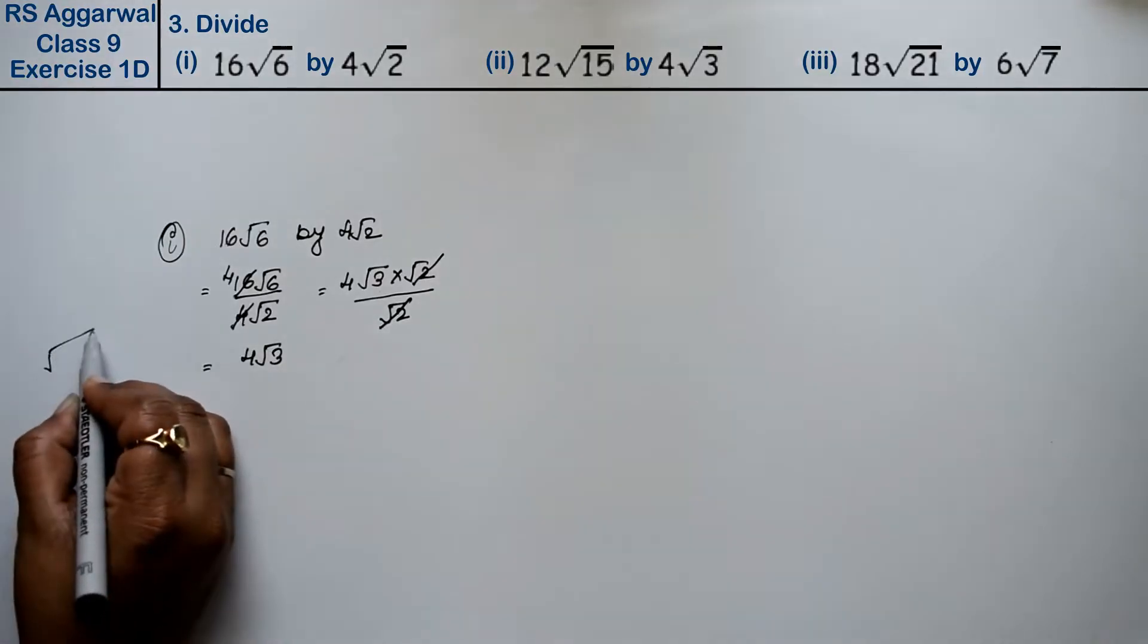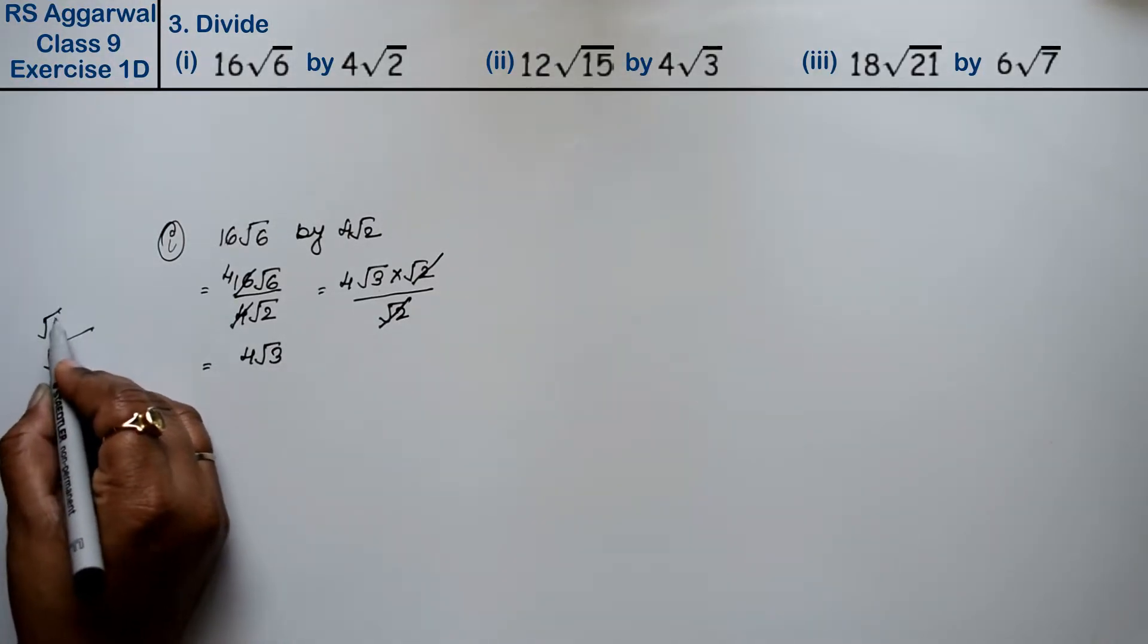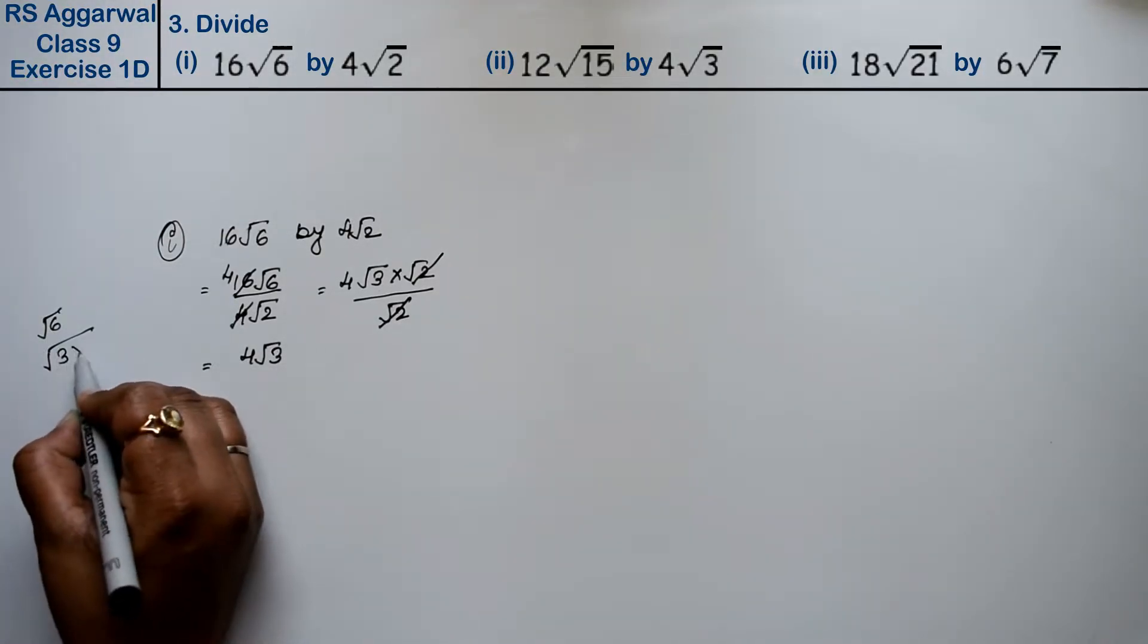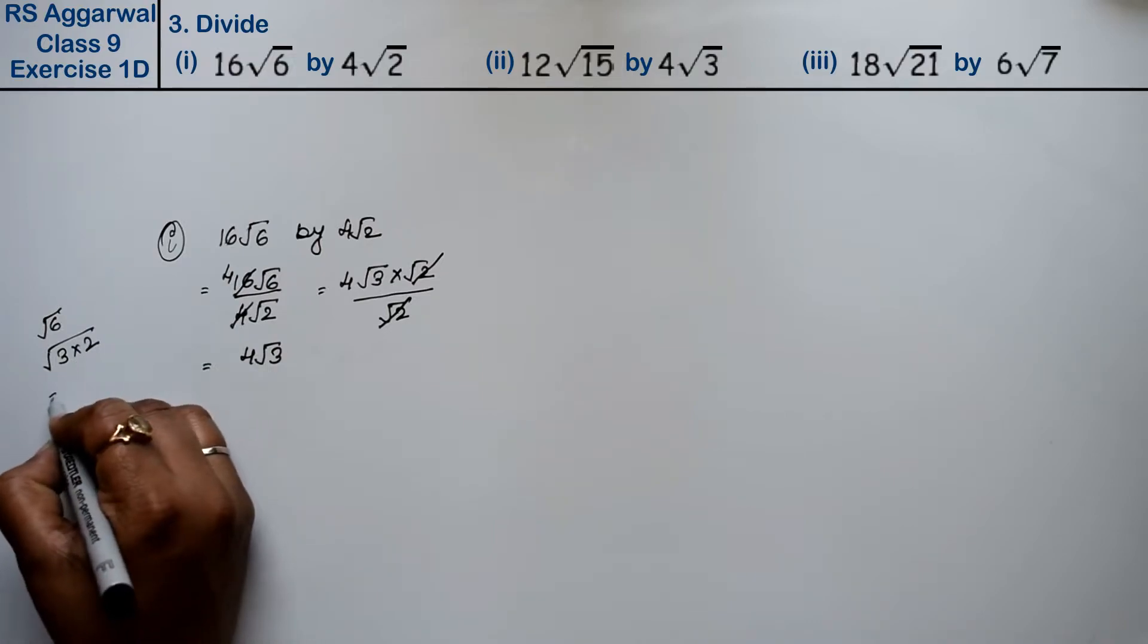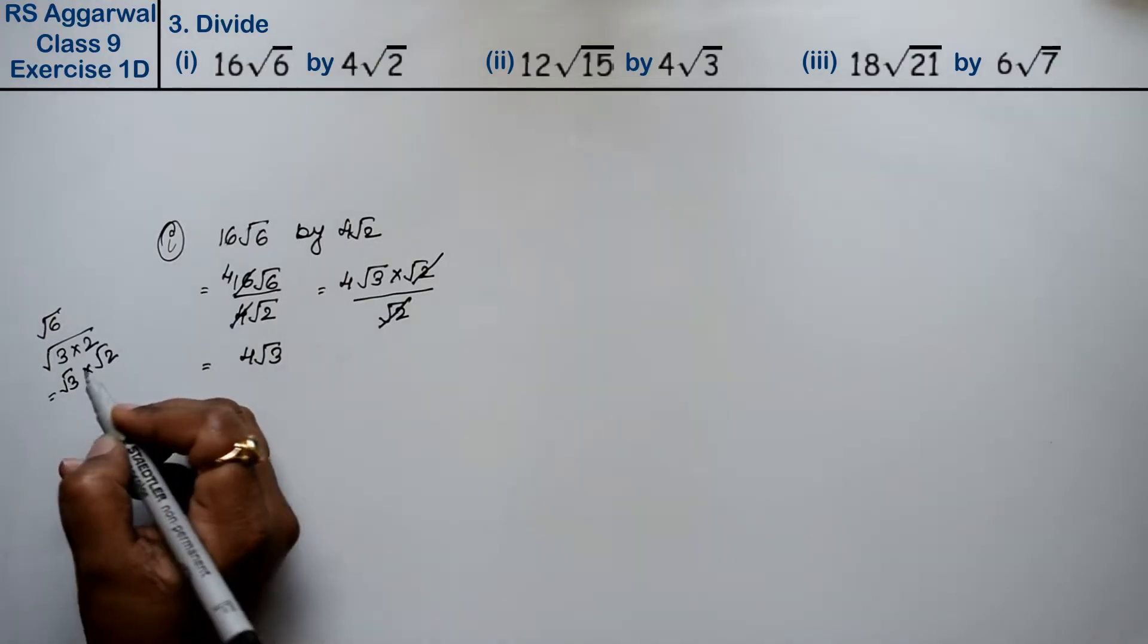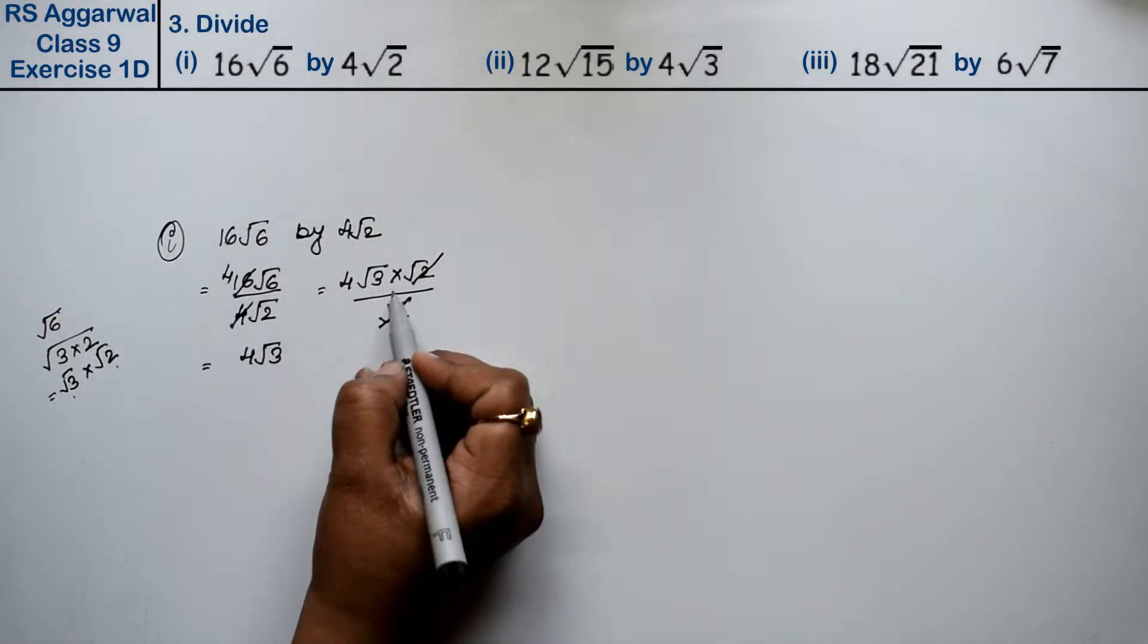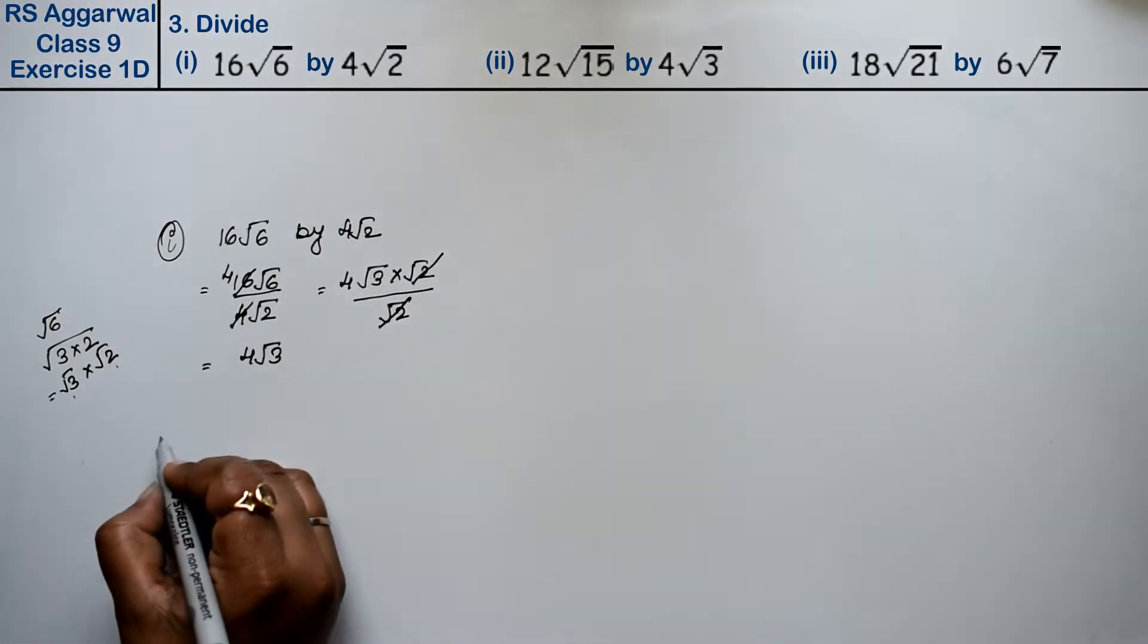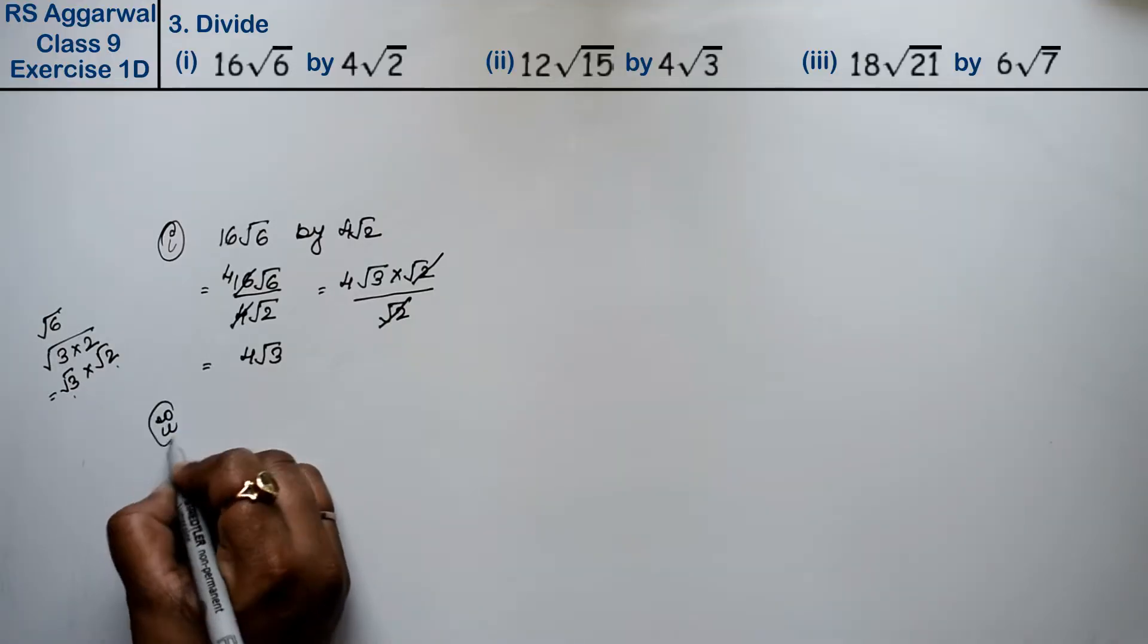What did I write for √6? I factored 3 times 2, and I can write it as √3 times √2. So I can write it differently and cancel. Let's do the second part.